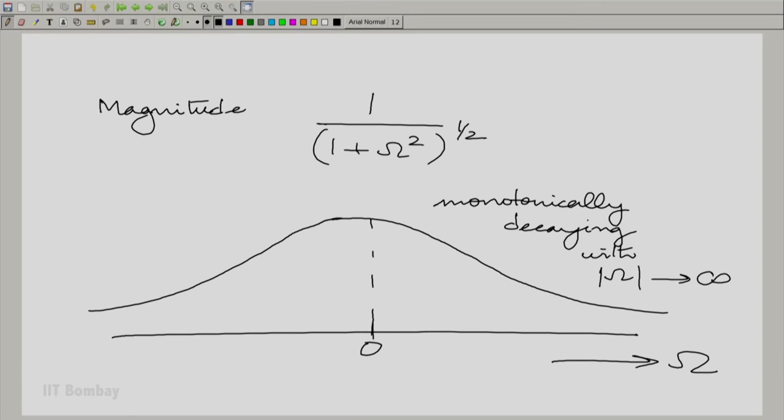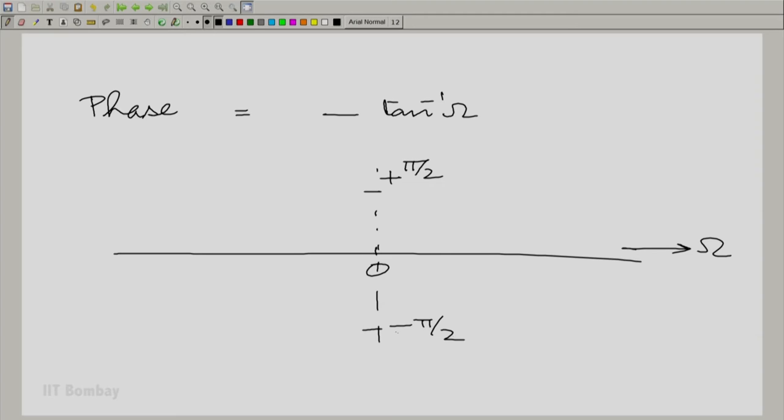Just for completeness, let us also write down the phase. The phase is -tan^(-1)(ω). As omega tends to plus infinity, it would go to -π/2, and as omega tends to minus infinity, it goes to +π/2. Essentially, it is a tangent curve.